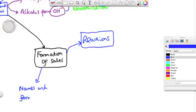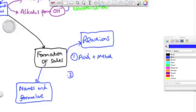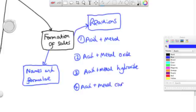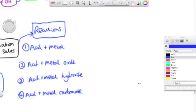In terms of formation of salts now, we're going to look at different reactions of salts, and the names and formula of salts produced, which you have to know for the exam. We're going to look at acids and metals, acids and metal oxides, acids and metal hydroxides, and also acids and metal carbonates.